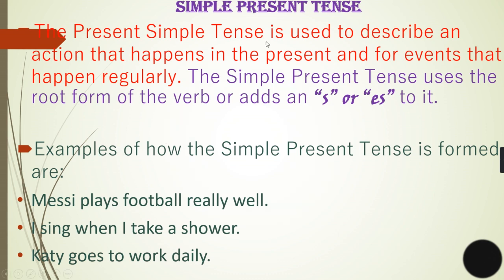Rule second says subject plus verb first form plus object - that is for plural subjects. The base form of the verb remains the same. Like here, children play - plural subject. Here it is singular: child plays. Simple present tense is broadly used to describe an action that happens in the present and for events that happen regularly, habitual actions, or universal facts. The simple present tense uses the root form of the verb or adds s or es to it. I just explained where s or es is added. Examples of how the simple present tense is formed are: Messi plays football really well, I sing when I take a shower, Katie goes to work daily.